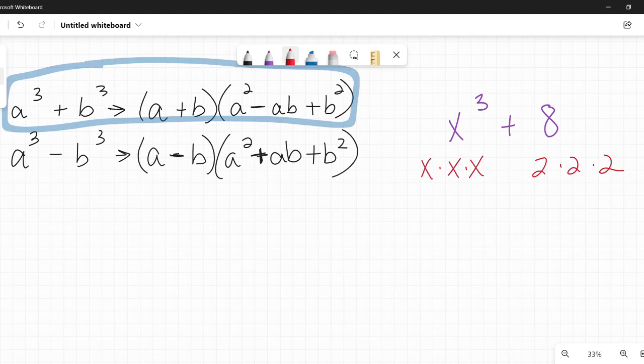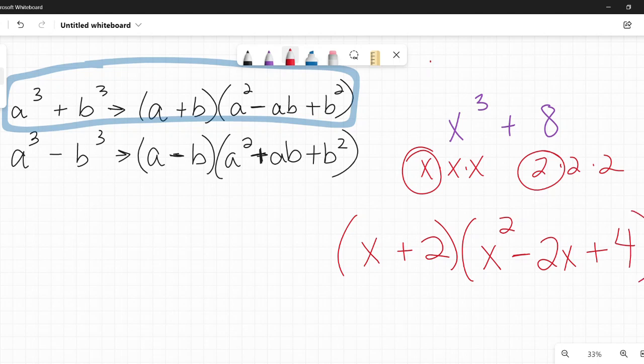So I'm going to be using this top pattern up here. And the correlation here is my a, wherever there's an a, I'm going to plug in x. And wherever there's a b, I'm going to plug in 2. So the pattern says, there's an a, so I plug in an x, then a plus sign. Then there's a b, so I plug in 2. Then the first thing is a squared. So I plug in my x, x squared. Then a minus sign. Then a times b, so 2 times x, 2x, plus sign b squared. My b is 2, 2 squared is 4. And I've factored it.